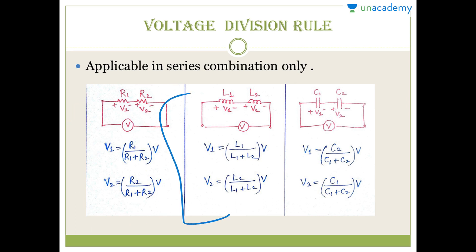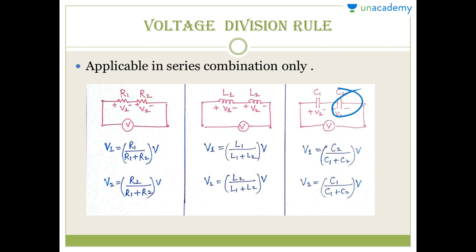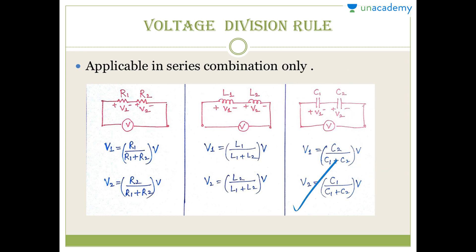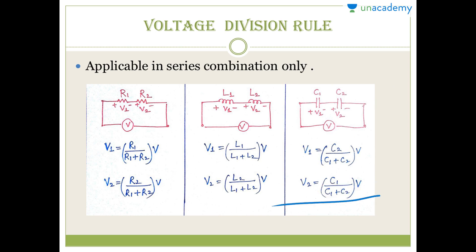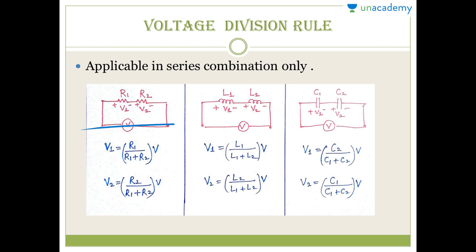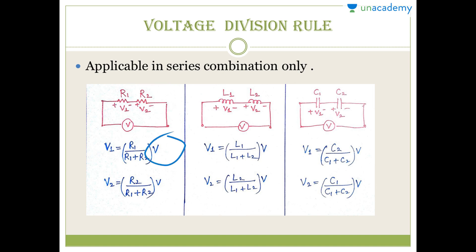For capacitors the voltage division rule is different. To find V1 (voltage across C1), you write C2 in the numerator divided by the total capacitance, multiplied by the source voltage. To find V2 (voltage across C2), you write C1 divided by the total capacitance multiplied by the source voltage. So whenever voltage is divided in a series combination, write the opposite element in the numerator for capacitors.